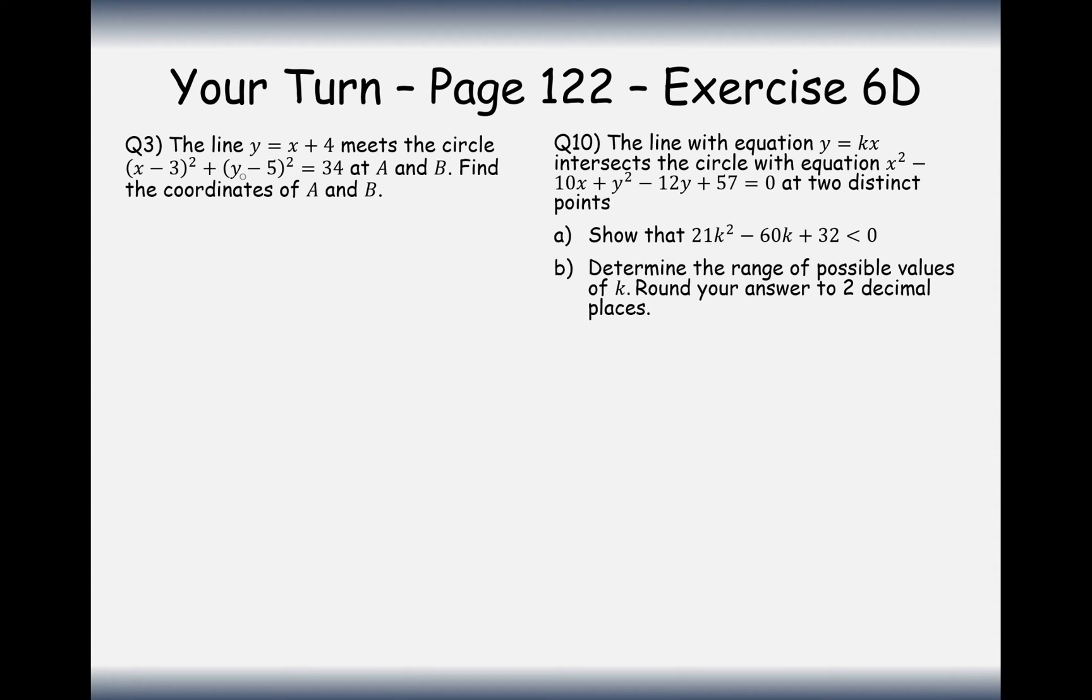Let's have a go at this question here then. y equals x plus 4 meets the circle x minus 3 squared plus y minus 5 squared equals 34. Find the coordinates A and B. What we do is we solve this equation by method of substitution. It's going to be x minus 3 squared add, now y, we're going to replace with x plus 4, but seeing as we're taking away 5 afterwards, we're going to have x minus 1 squared equals 34. Expand the brackets, I'm going to get x squared minus 6x plus 9 plus x squared minus 2x plus 1 equals 34.